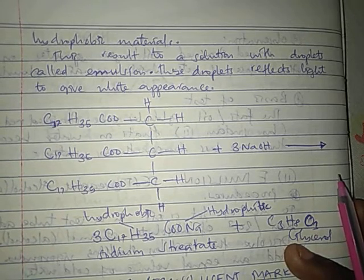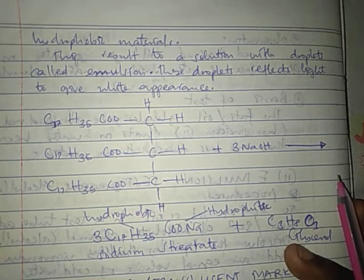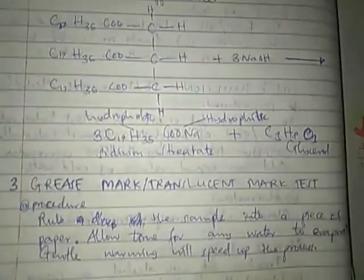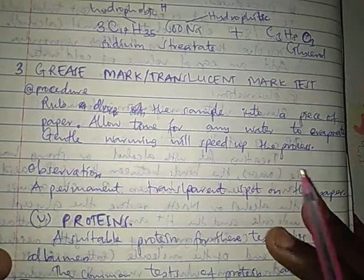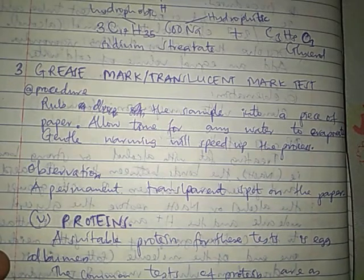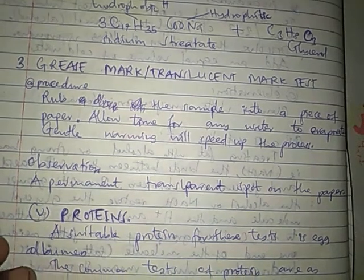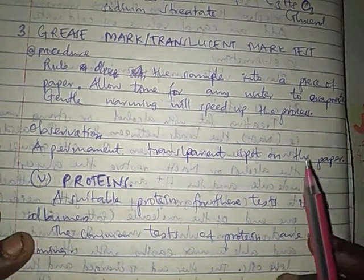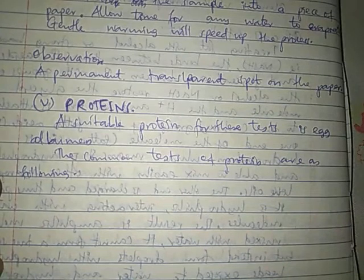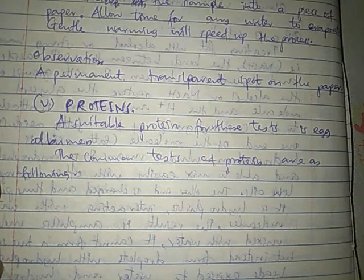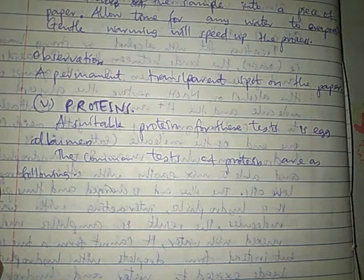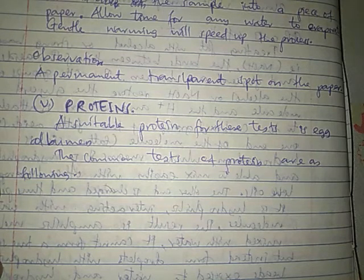You need to know how we test protein and lipids in the laboratory. For the glass mark or translucent mark test: place a small amount of fat or oil on a piece of paper, allow time for any water to evaporate, then hold the paper up to light. Observation: a permanent transparent spot on the paper. For the protein test, we test using copper(II) sulfate solution and sodium hydroxide. The final result is a purple color.